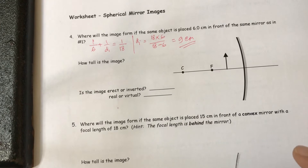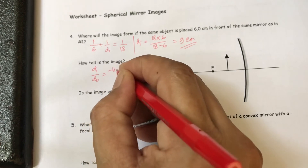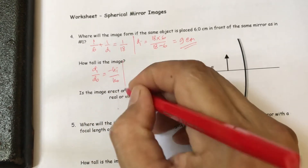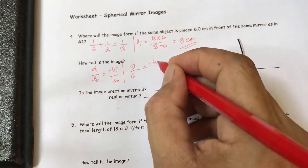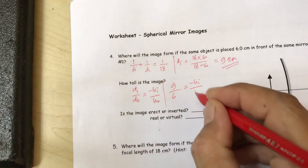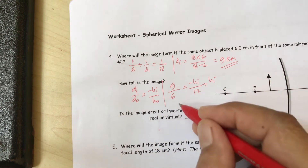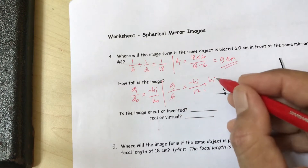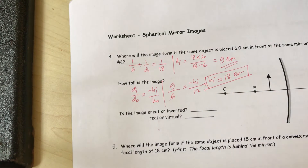For the height of the image: d-i divided by d-o equals h-i divided by h-o. Here d-i is 9, d-o is 6, and h-o is 12. So h-i equals 2 times 9, which is 18 centimeters.